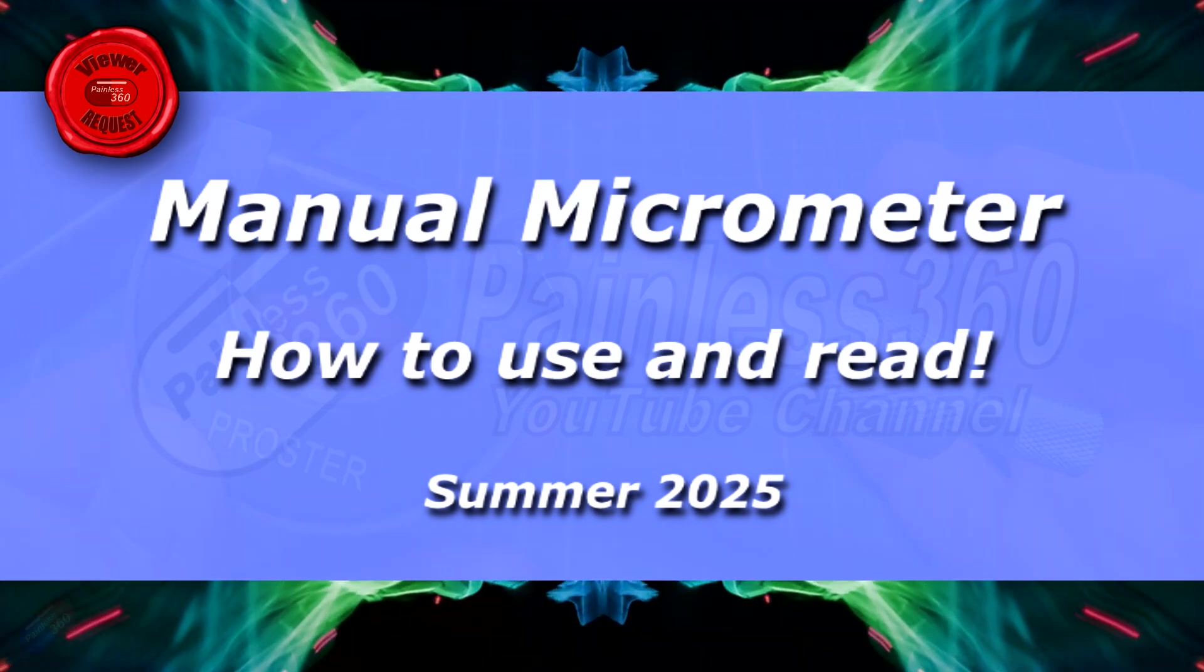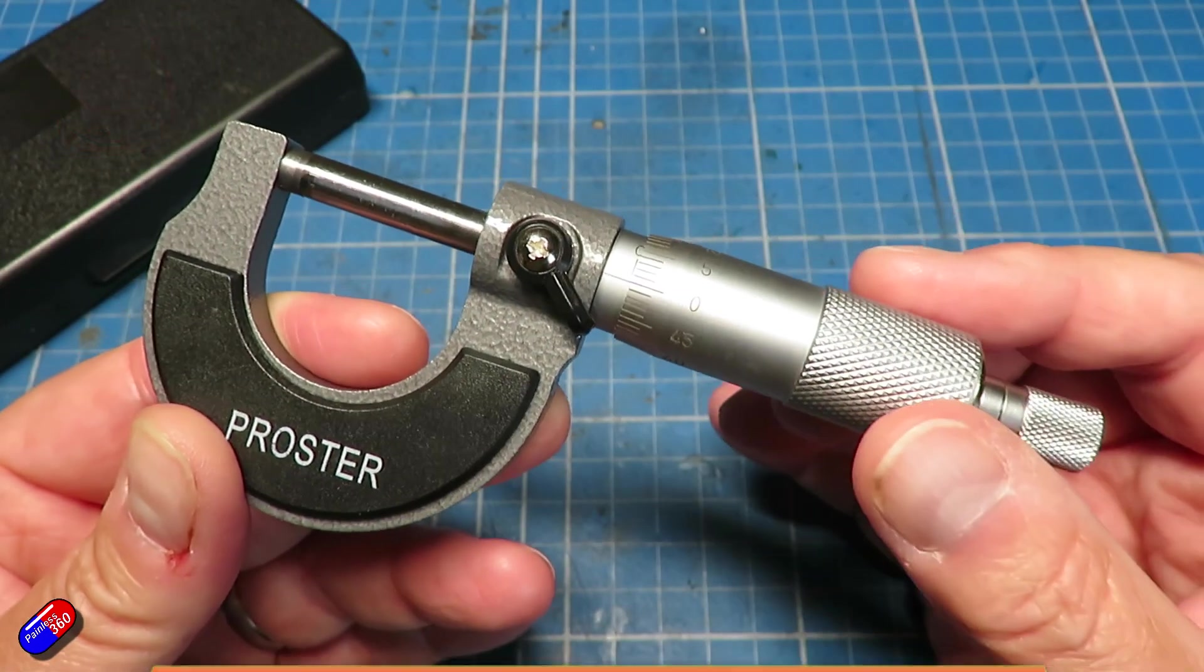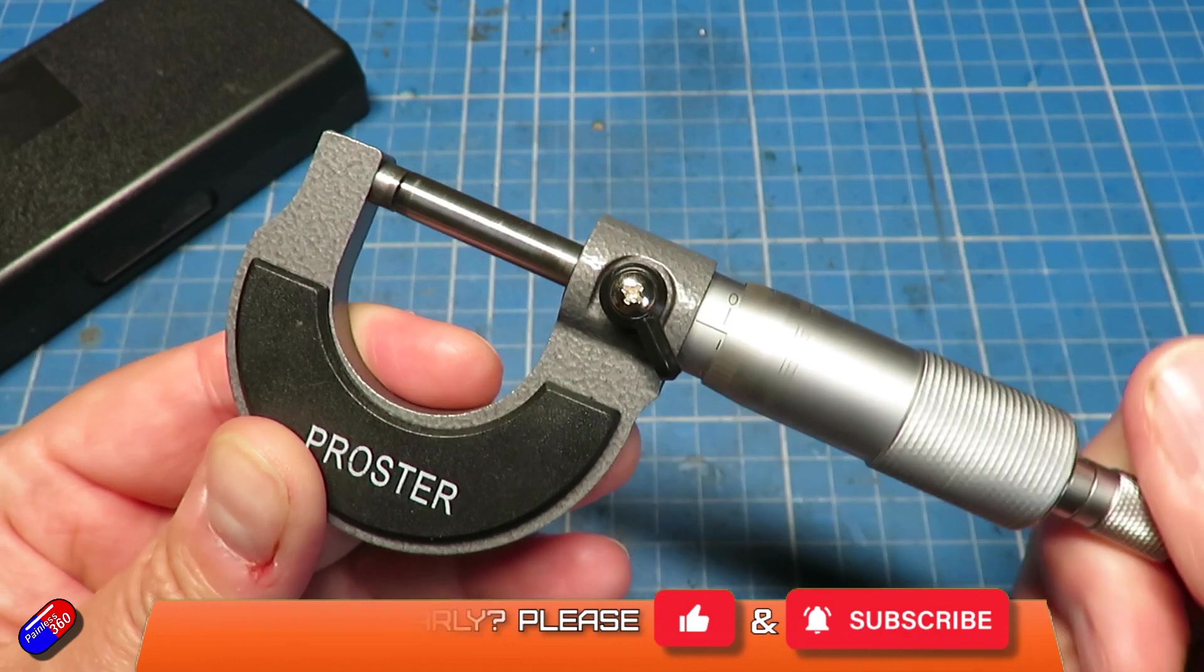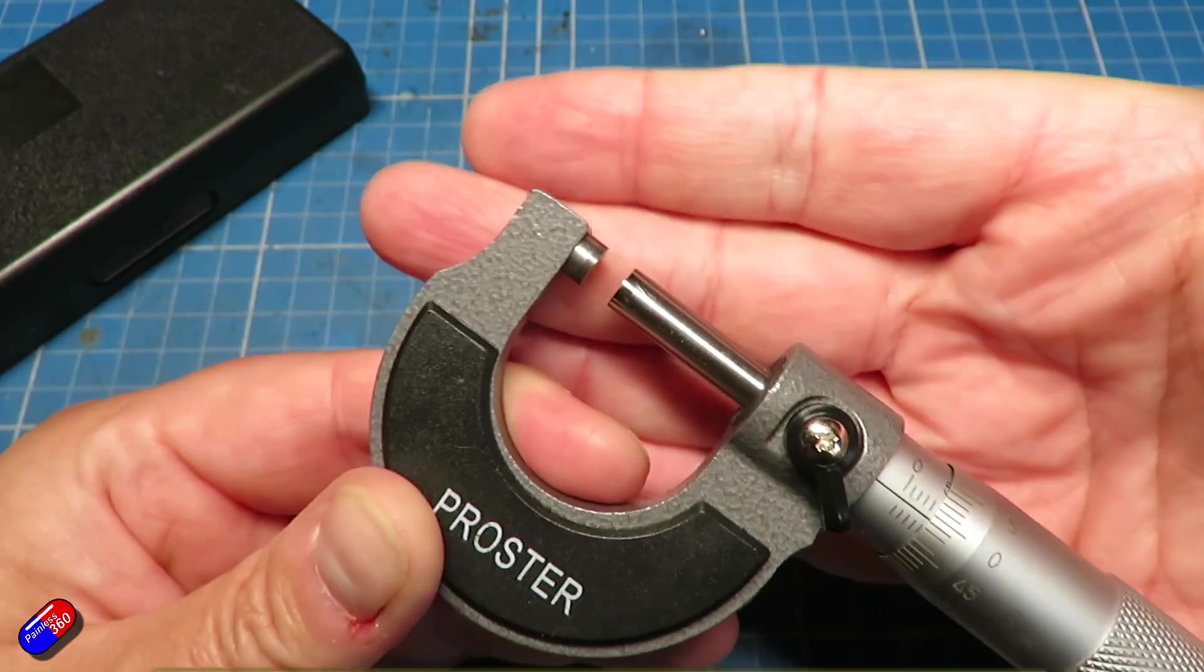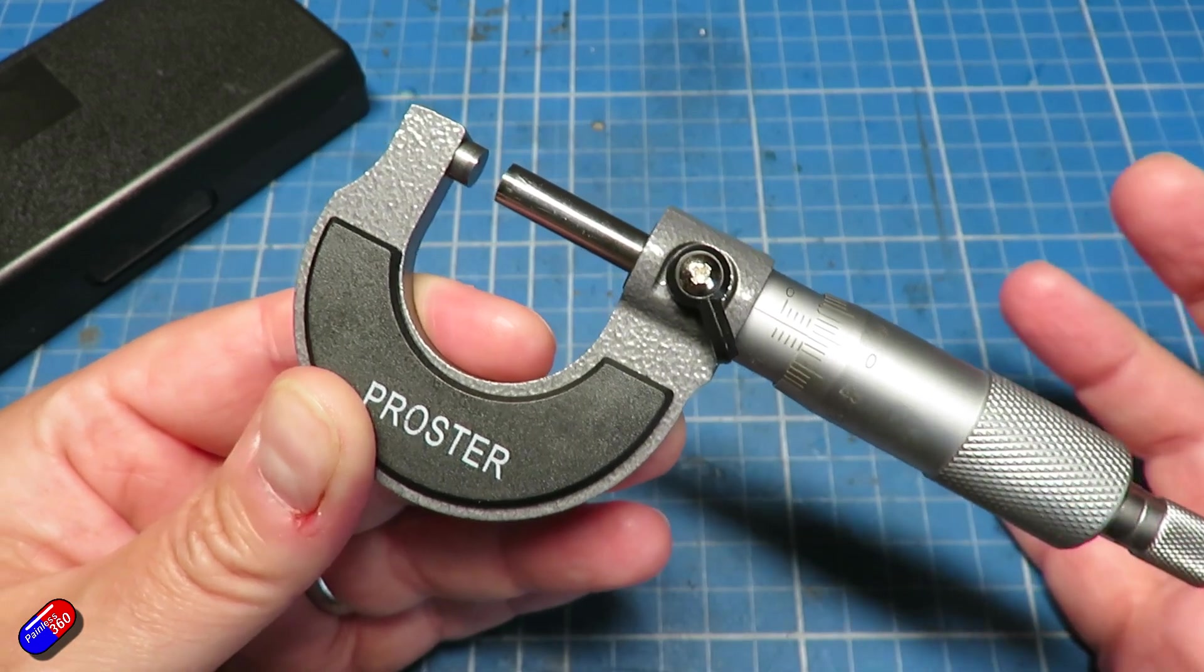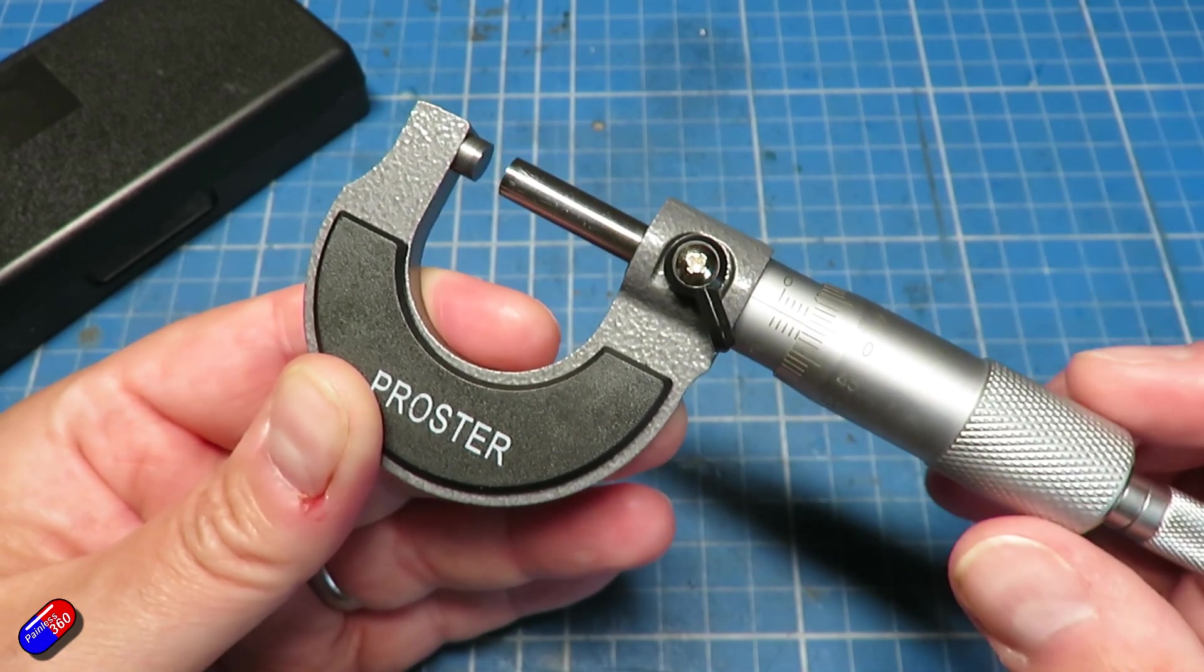Hello and welcome to this quick video about how you use something like this. This is a micrometer and the way it works is that as you unwind it, the gap between these two pieces of metal can be measured incredibly accurately.